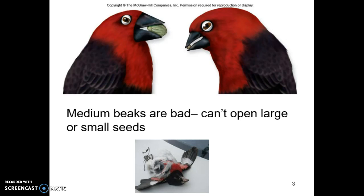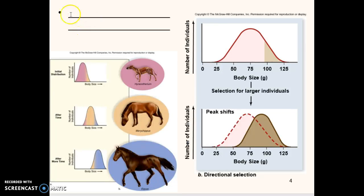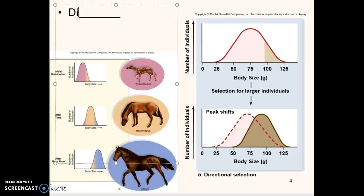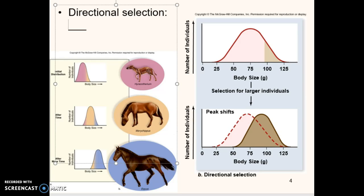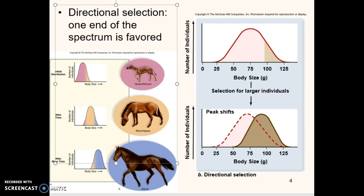Sometimes selection is called directional selection. In directional selection, one end of the spectrum is favored. For whatever reason, being really big is good, and generation after generation the bigger you are, the more likely you are to survive. Or it could be smaller and smaller. But directional selection means the most frequent phenotype shifts to one end of the spectrum.